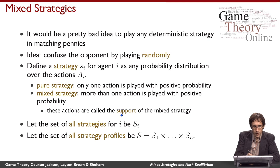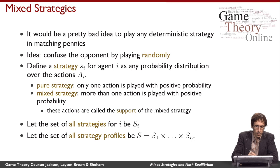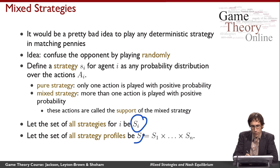The support of a mixed strategy is the set of actions that get positive probability. For example, when I flip a coin in matching pennies, both heads and tails are in the support — the support is the set {heads, tails}. I'll define the set of all strategies for agent i as capital S sub i, and the set of all strategy profiles, capital S, as the Cartesian product of these strategy sets for the different agents.